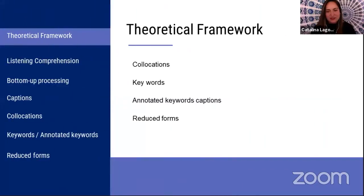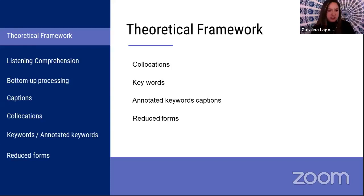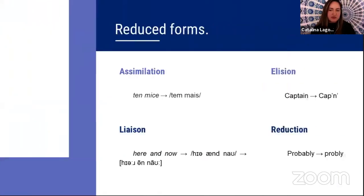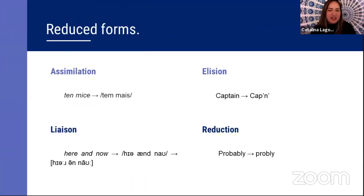To define some key terms: collocations refers to a group of two or more words that usually go together. Keywords means key vocabulary — words that can help with difficult vocabulary or idiomatic expressions critical to understanding a listening. Annotated keyword captions are a format similar to pictorial representations of reduced forms. Reduced forms are defined by Ito in 2001 as phonological simplifications or variations — four types are assimilation, elision, liaison, and reduction.